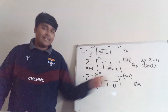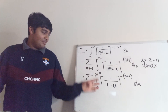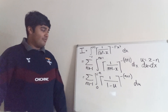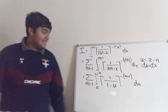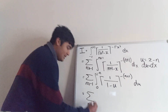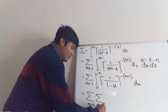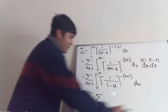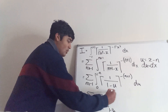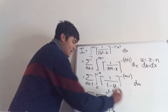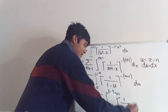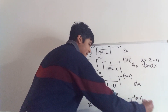We've still got a ceiling function here that we want to deal with. Whenever we have an integral involving a ceiling or floor function, we want to write it as the sum of integrals. So this becomes the sum from n equals minus 1 to infinity of the sum from m equals 1 to infinity of the integral from 1 minus 1 over m to 1 minus 1 over m plus 1, of the ceiling of 1 over 1 minus u to the minus n plus 1, du.